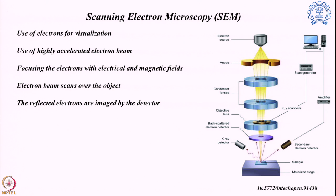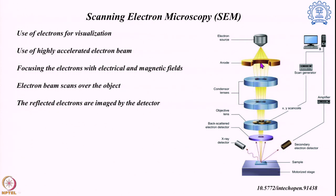One complementary electron microscopy technique after TEM is scanning electron microscopy, or SEM. Here we also use a similar electron source with accelerated, fast-moving, high-energetic electrons. Again we use electromagnetic lenses to focus the sample, where the electrical and magnetic field through these lenses converts a widely spreading electron beam into a very focused electron beam, which is then directed onto the sample.